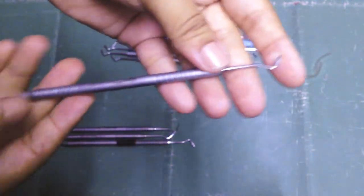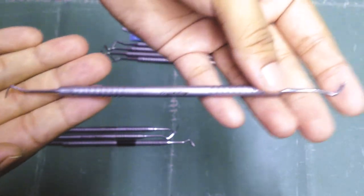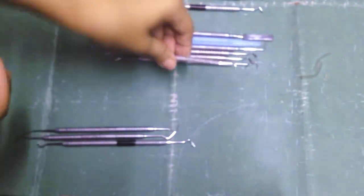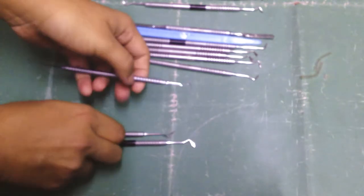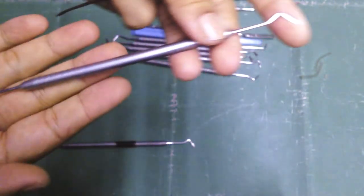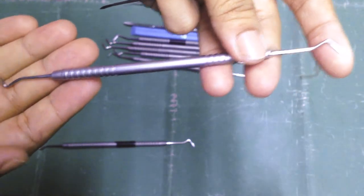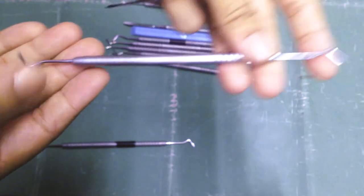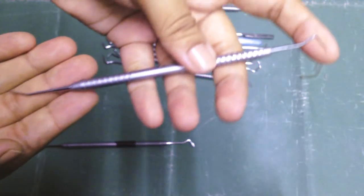Let's start with this one. This is a Hollenback carver. Then here, let's take both of these. This is a Walls carver, and this is a Ward's carver.